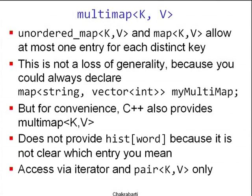Unordered_map and map allow at most one entry for each distinct key — you either have a mapping or you don't, but you can never have two mappings under the same key. Sometimes you need that. You could always use a vector of ints as the value and store all values you want, but it's tedious. So for convenience, C++ also provides what's called a multi-map, where there could be multiple entries under the same key with different values.